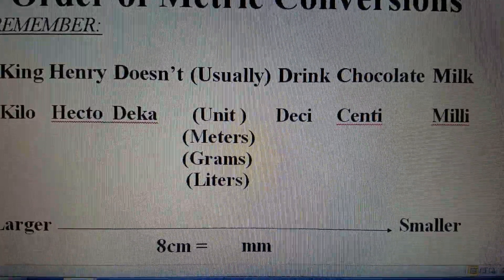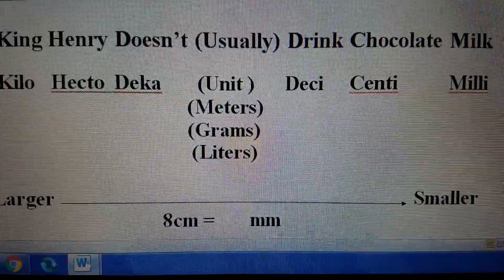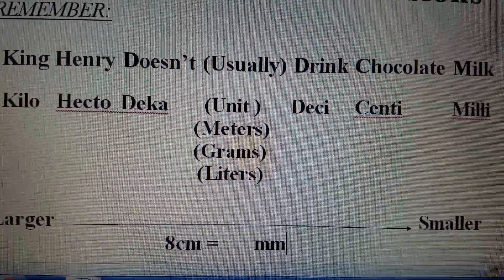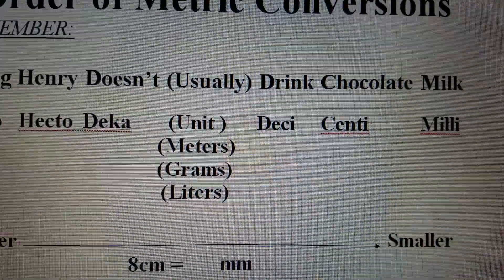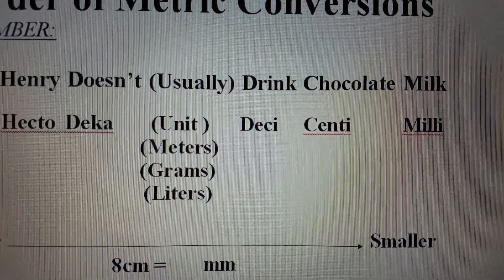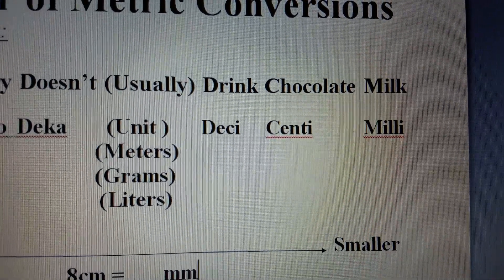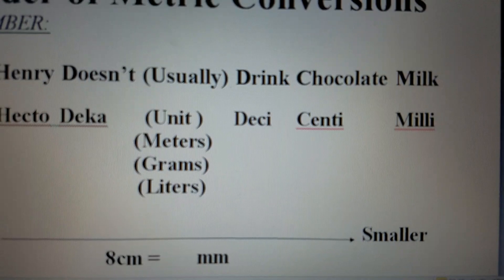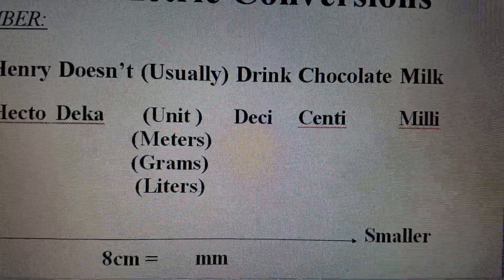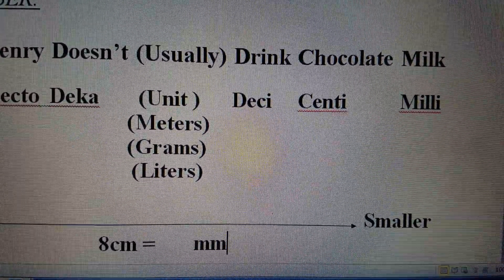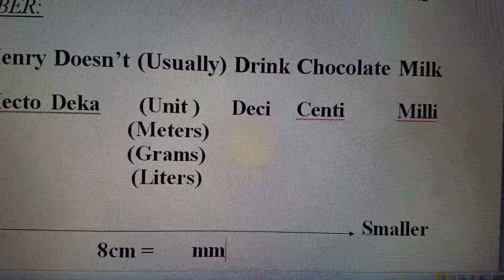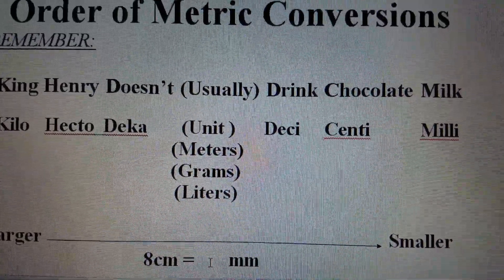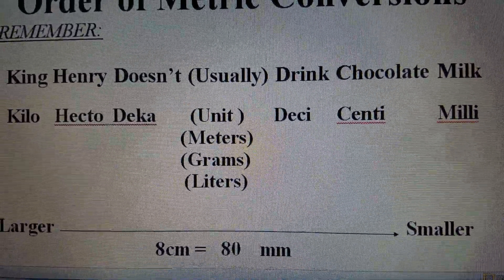So let's get started. On the bottom of the page, you can see I'm trying to convert 8 centimeters to millimeters. Looking at the acronym, I find centimeter, which is to the right of the acronym, and millimeter is one word over from centimeter. I would move the imaginary decimal to the right of 8 one place value over. My new answer would be: 8 centimeters is the same as 80 millimeters.